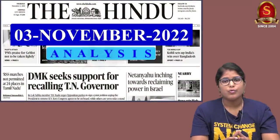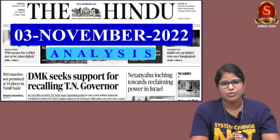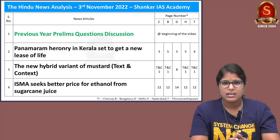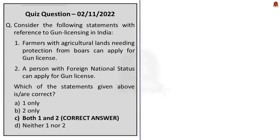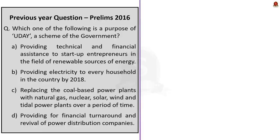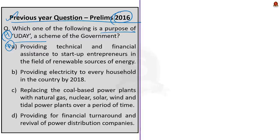With this announcement, let us move on to the Hindu newspaper analysis for today. The list of articles are displayed here for your reference. Today, let us start our news article discussion with this previous year question — it is the 7th question in Set A of the 2016 UPSC preliminary paper. The question is asking about the purpose of the UDAY scheme.